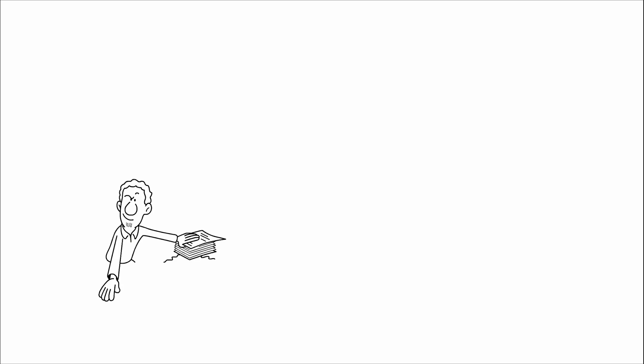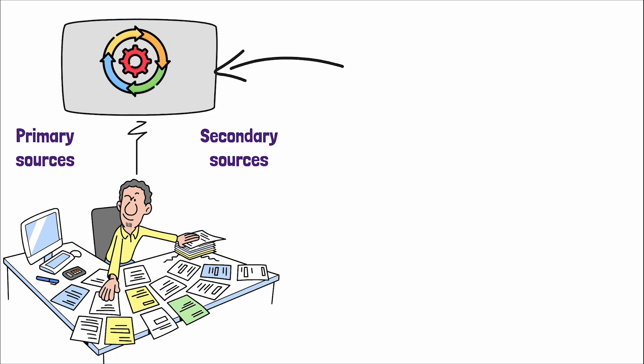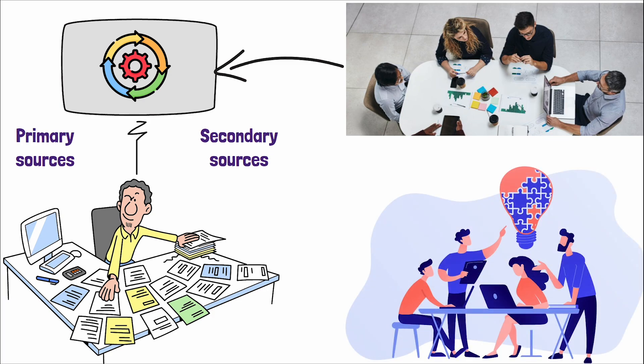Once the data is gathered, whether from primary or secondary sources, the last step in the marketing research process is the interpretation of findings. This is where data is transformed into intelligence, insights are drawn, and strategic decisions are made. Interpretation is the lighthouse guiding companies through the fog of information, illuminating the path forward.